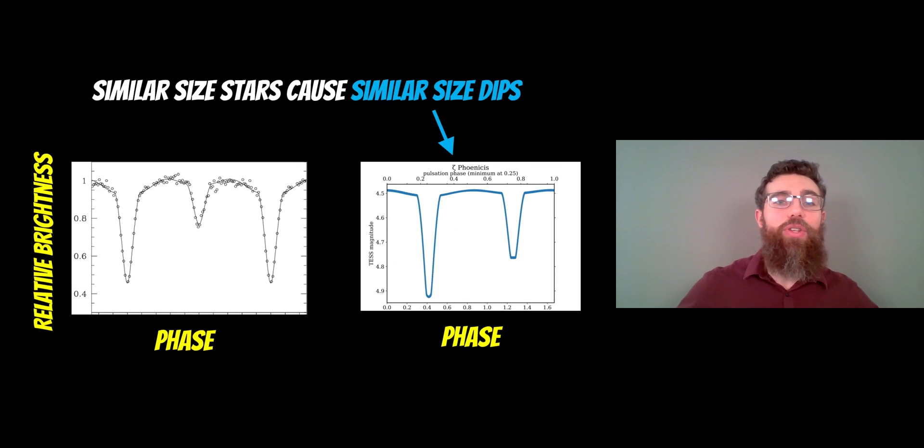Now, if the two stars are of a similar size, then the dip in brightness from both eclipses is similar. If both stars are exactly the same size when they eclipse each other, then they're going to have the same size dips. That obviously makes assumptions that they're the same brightness, same temperature. But similar sorts of stars cause a similar size dip.